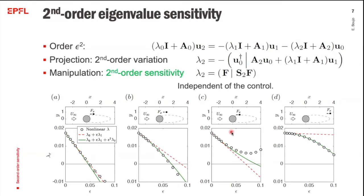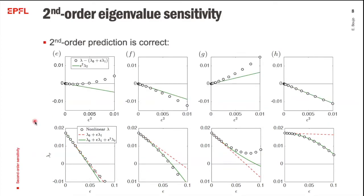Using the same method, collecting terms at order ε², projecting onto the eigenmode, you get an expression for the second-order eigenvalue variation, which has two terms. Manipulating that to isolate the control — it now appears twice because it is a quadratic effect — you obtain the second-order sensitivity, which is again independent of the control. The resulting green curves are generally in much better agreement than the first-order red lines. We can also isolate the second-order variation by subtracting the first order, plotting it as a function of ε², and check that the slope at zero is very good.